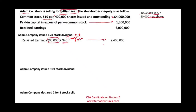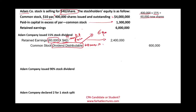For every debit we need a credit. We credit first an account called Common Stock Dividend Distributable for $600,000, which is the number of new shares times $10 par value — the same way we would credit common stock. But since we have not yet distributed the stock, we use the distributable account. This is an equity account, not a liability.